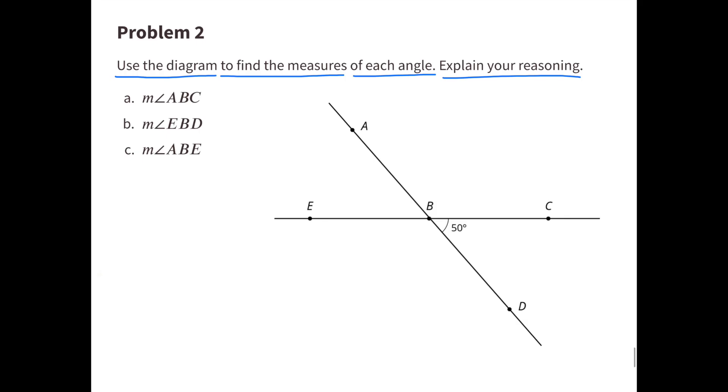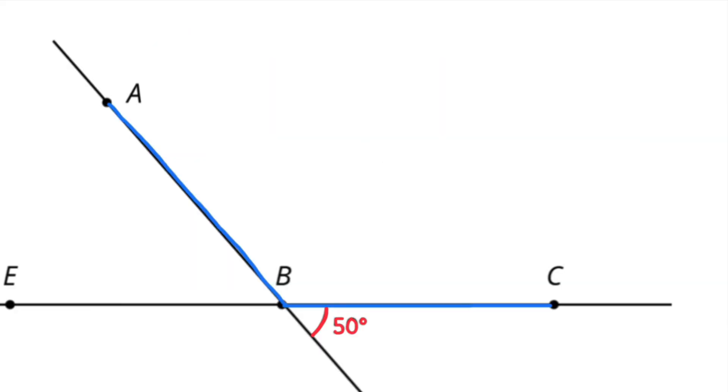Number 2. Use the diagram to find the measures of each angle. Explain your reasoning. A. What is the measure of angle ABC? I've highlighted angle ABC in blue and I've highlighted 50 degrees in red.